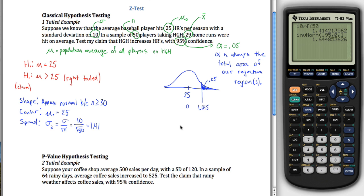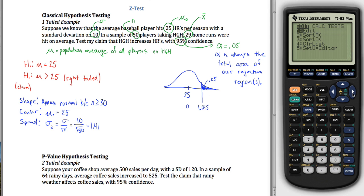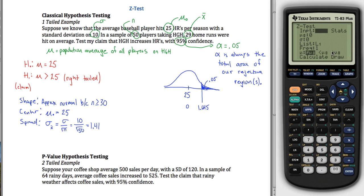Now we just need our test statistic — where does 29 fall in this picture? Hit stat, go to tests, and select z-test (the first one). It'll ask if you have data or statistics — in this case, statistics. Enter mu naught as 25, sigma as 10 (not 1.41 — it wants sigma, not sigma sub x-bar), x-bar as 29, and n as 50. Then it asks for your alternative hypothesis: mu greater than mu naught. Highlight that and hit calculate.